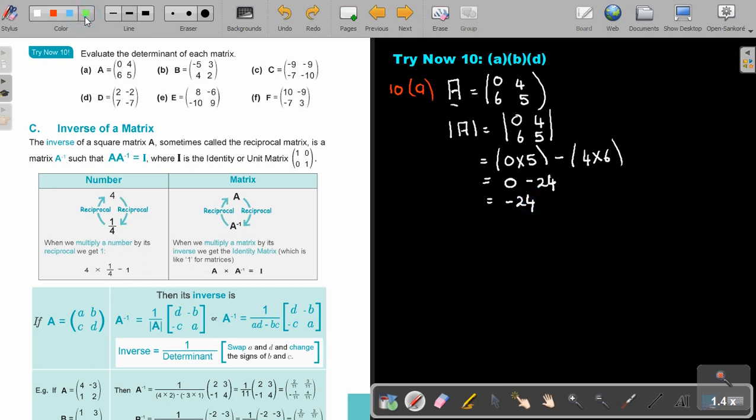Let's look at the next one. It was number B. So what was B? B was negative 5 and 4 and 3 and 2. So if I want to find the determinant,